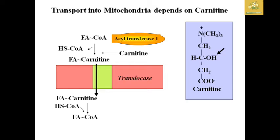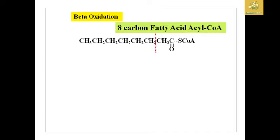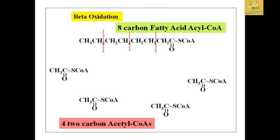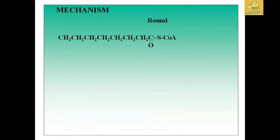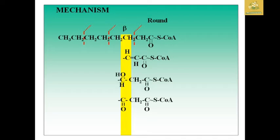Acylcarnitine moves through a translocase in the mitochondrial membrane. Inside the mitochondria, HS-CoA drives the reaction, carnitine is released, and acyltransferase 2 is formed — this is a reversible process. The real beta oxidation then occurs: an 8-carbon fatty acyl-CoA is broken down in each cycle into four 2-carbon acetyl-CoA units for easy oxidation.